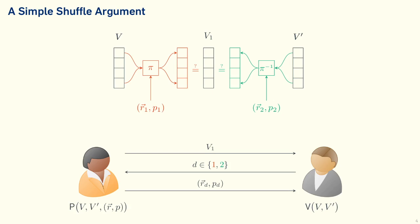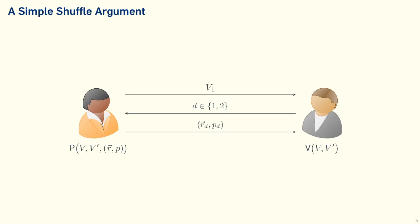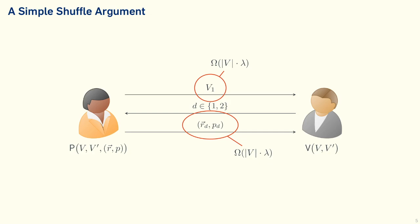Why do we not just use this shuffle argument? It's a Sigma protocol — we can get the soundness error down through sequential repetition and apply Fiat-Shamir to make it non-interactive. However, this argument is actually huge because both prover messages, V1 and the randomness values in the third message, scale linearly with the length of vector V. We can only prove relatively short shuffles efficiently; ideally we want communication that scales independently of the length of the permuted vectors.